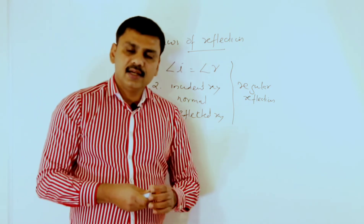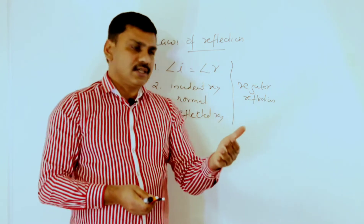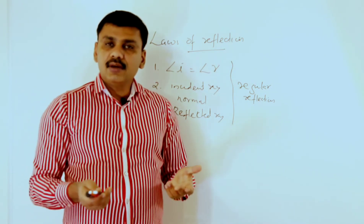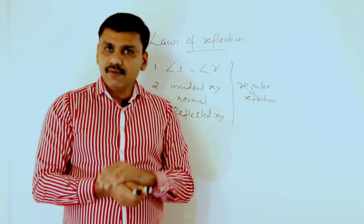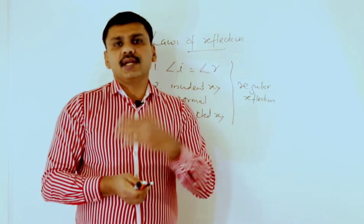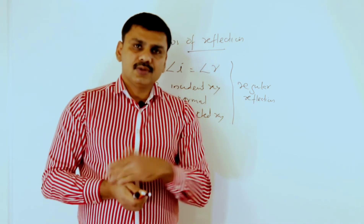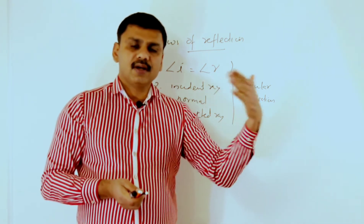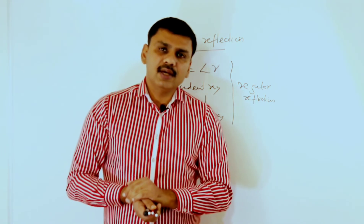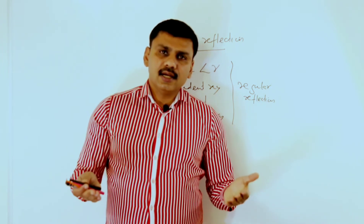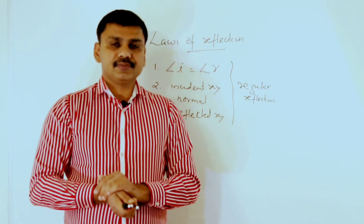The laws of reflection are valid in the case of regular reflection only. In the case of irregular reflection, the angle of incidence will not be equal to the angle of reflection, and the incident ray, normal, and reflected ray will not be in the same plane. Irregular reflection can be seen from a wall or any rough surface.